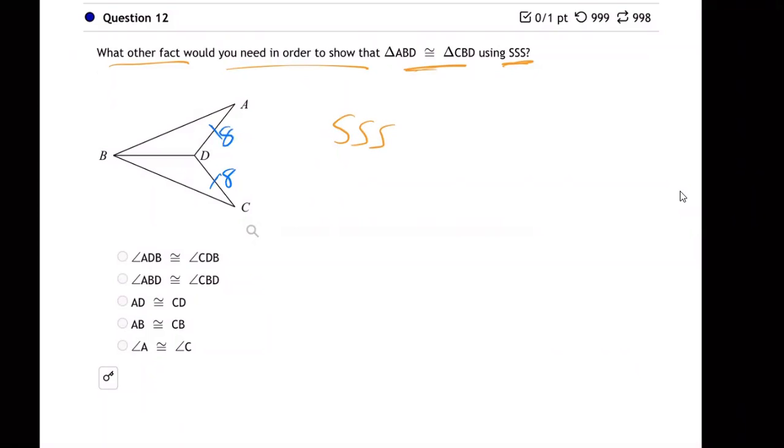Or whatever. And then we know this side right here, whatever it is, it's the same as itself. Maybe it's six and six, whatever. Whatever length it is, it's the same as itself and it's a part of both triangles. And then finally, what we need is we need to know this side